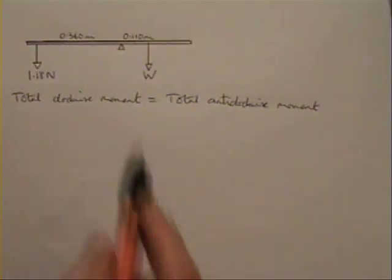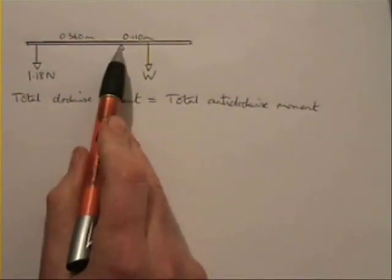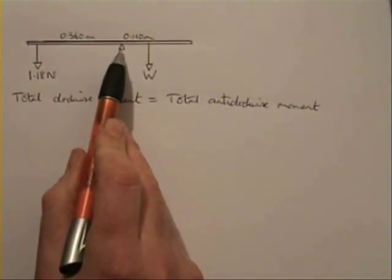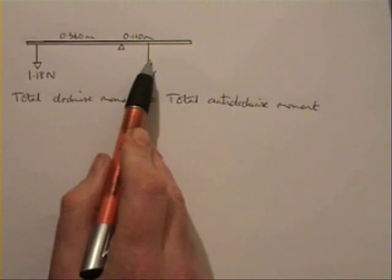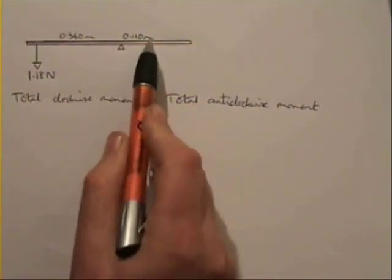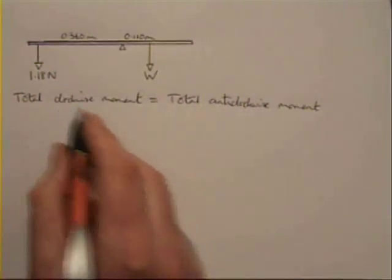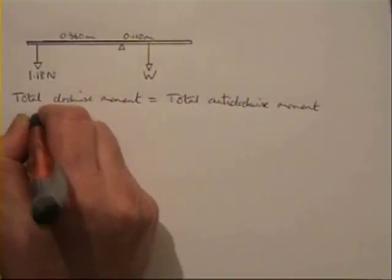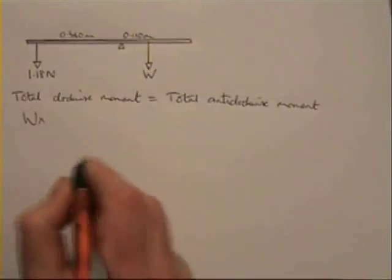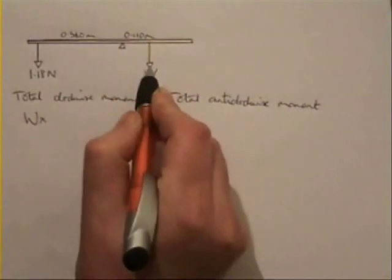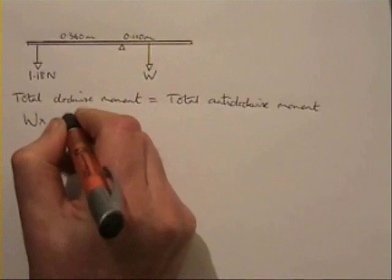And of course we're taking moments about the pivot, which was the banana. So if we look at this as the pivot point, we're going to deal with the clockwise moments first. Which force would tend to make the system turn clockwise? And the answer is, if that's the pivot, the weight W of the umbrella is the thing that's tending to turn the whole system clockwise. So the clockwise moment: the force is W, and the distance between the pivot and that force is 0.110 meters. So W times 0.110.